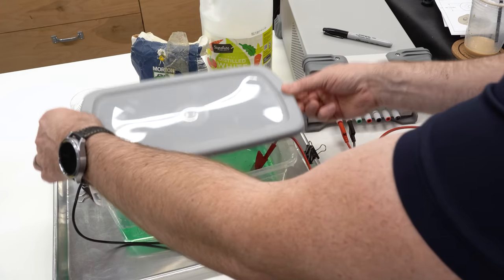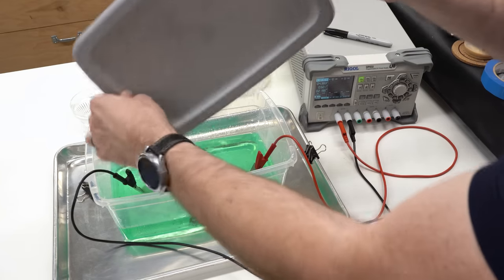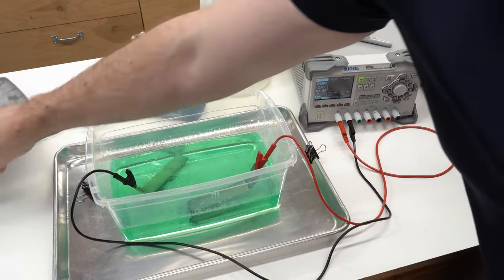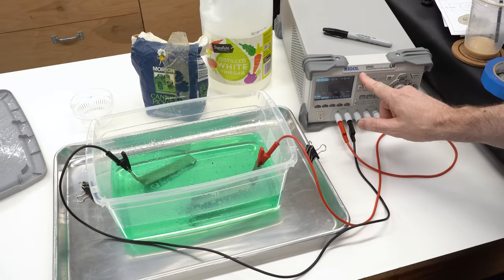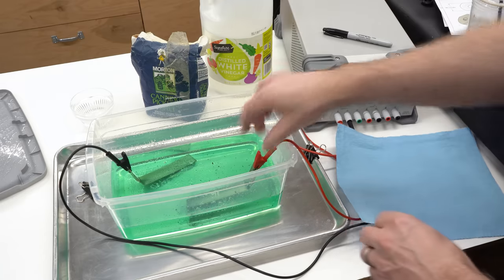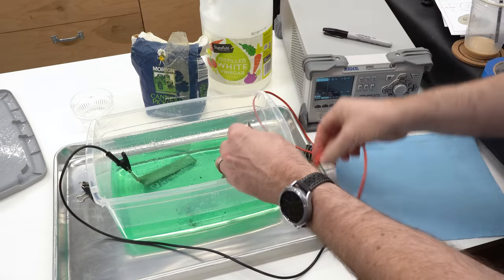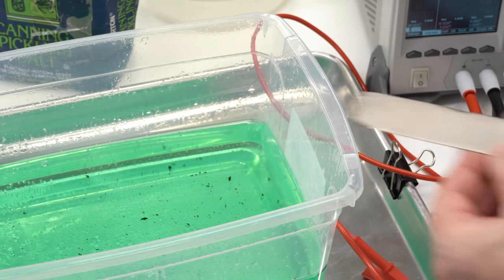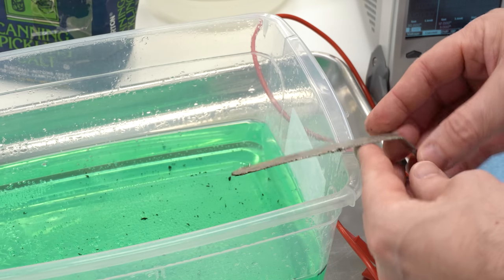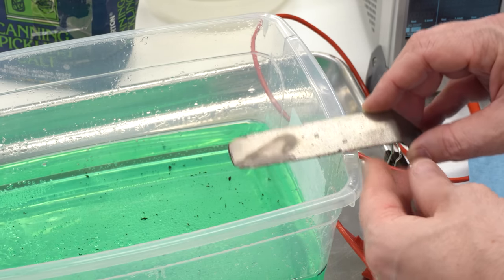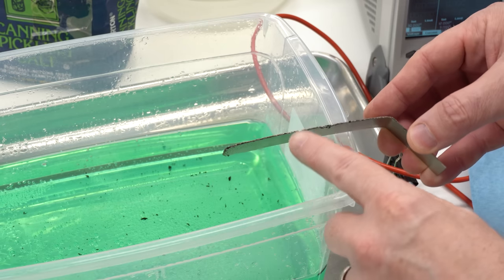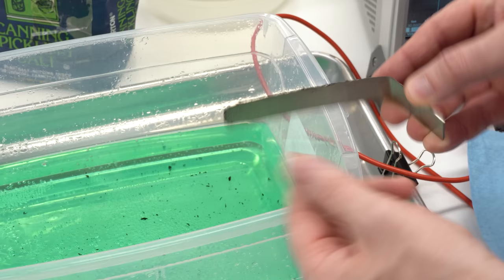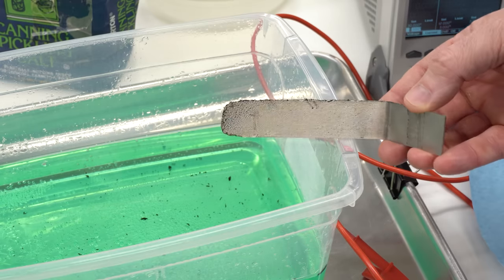And here we are several hours later after letting this thing set. Eventually I turned it back down to half an amp and just let it run until the solution didn't get any darker. So I think this is about as saturated as it's going to get. Just take the electrodes out here and take a look. This is the one that was the positive. You can see it's lost a lot of material around the edges. It's left some kind of black crusties. I assume that's the remaining 0.4% that's not really nickel.